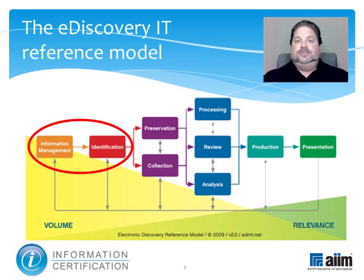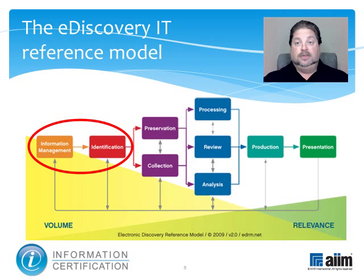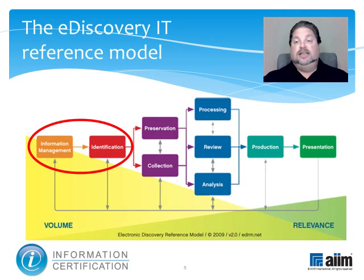The first two stages are information management and identification. These involve getting your electronic house in order so you can mitigate risk and expenses should eDiscovery become an issue — anywhere from the initial creation of electronically stored information through its final disposition. For example, accurate, well-managed metadata means faster searching, as well as defensible audit trails and improved security and access controls.